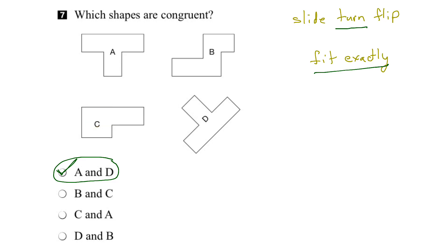Okay, so what we found out is that if we turn shape A, then it fits exactly with shape D, and so therefore A and D are congruent.